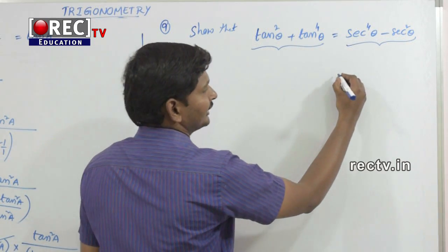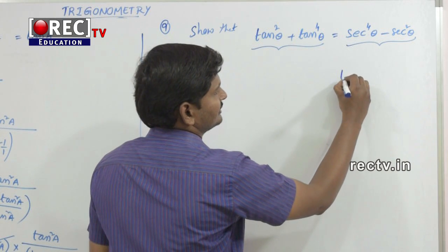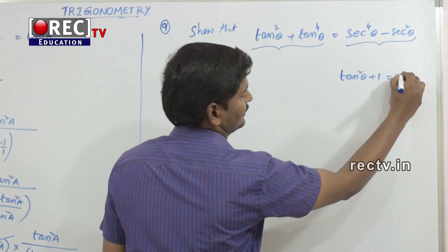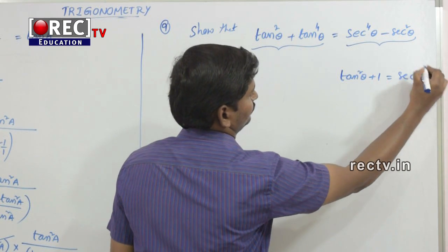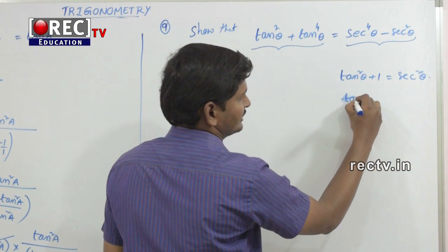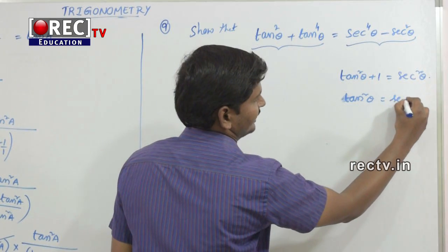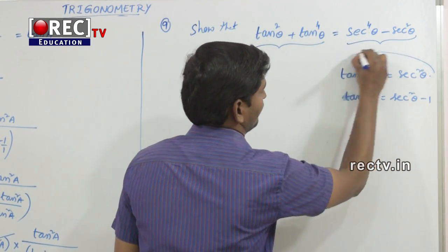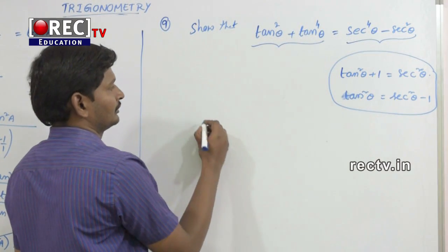The formula we are using is tan²θ + 1 = sec²θ, and therefore tan²θ = sec²θ - 1. We have to remember this formula to do this question.